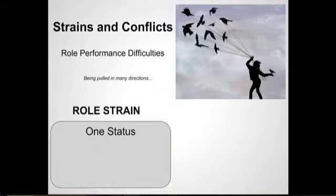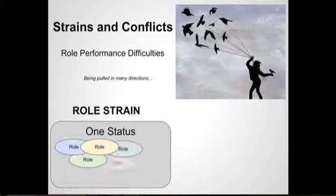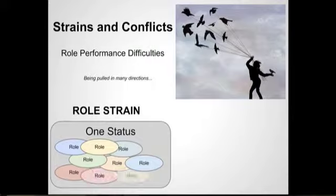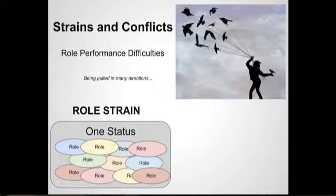Role performance can be troublesome for many people because different roles and statuses can make things complex. Role strain occurs when within one status we have multiple roles, and these roles keep piling up. With each role, the other role becomes a little more difficult to fulfill, so our role performance may not meet what is expected of us.